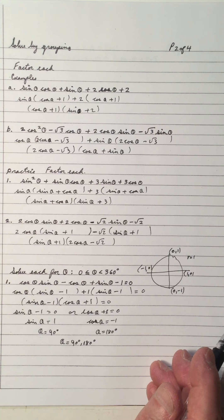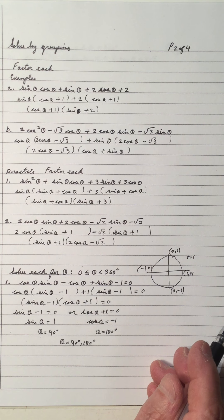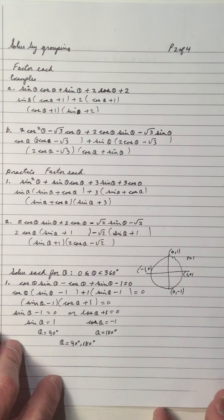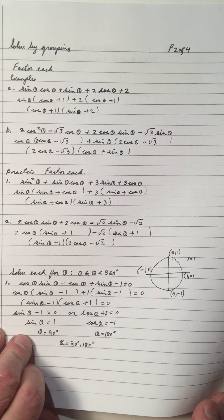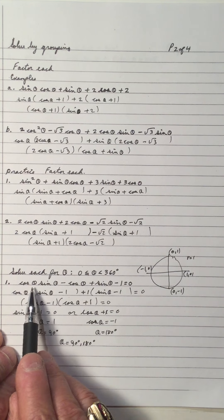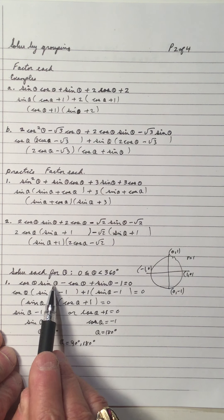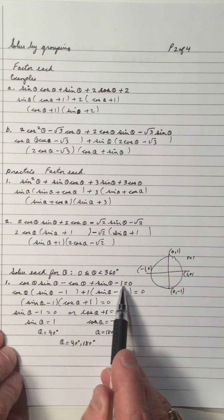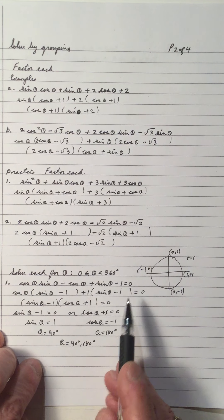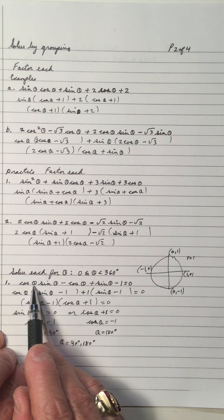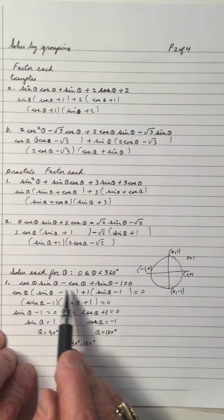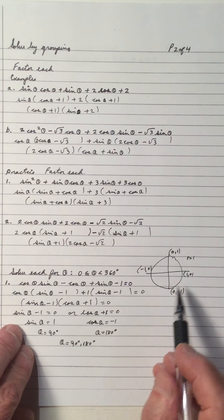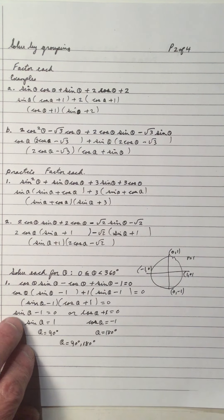So if you take either of those answers and plug back in and work it through, you will get zero. If you put 90 in place of theta here and here and here and work it through, you should get zero. And if you put 180 in place of theta and work it through using the unit circle or a calculator, you should get zero.